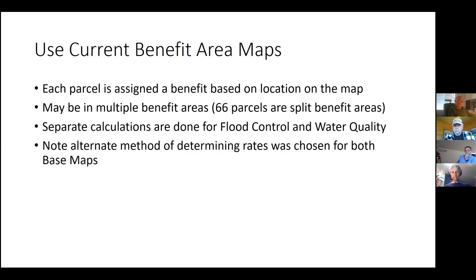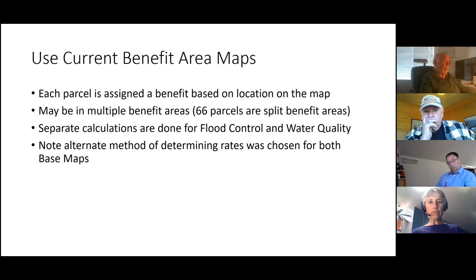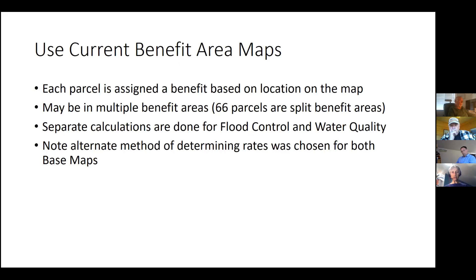Some parcels — 66 of them — are split between multiple benefit areas. One of the things to keep in mind is that when both of these maps were adopted, the alternate method of determining rates was chosen. That basically means that calculations are based on values, not the area of the parcel. So it takes into account the values in doing the rates.